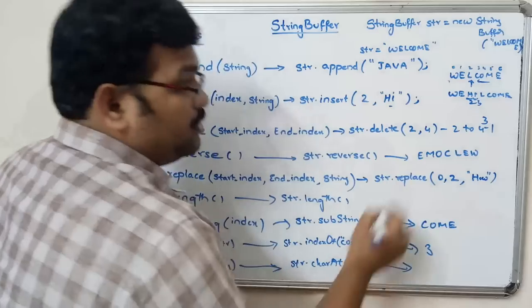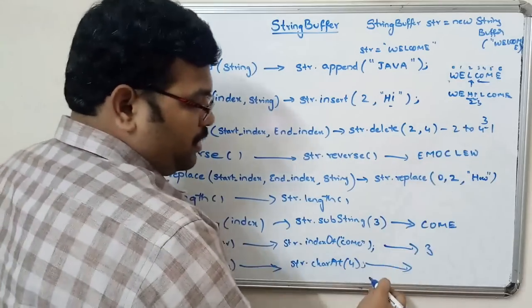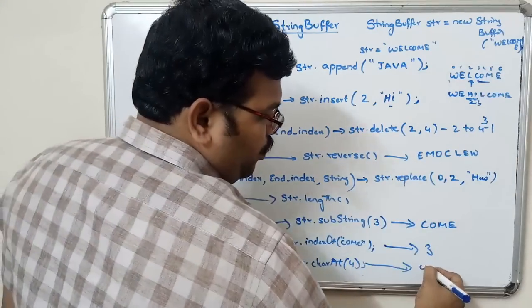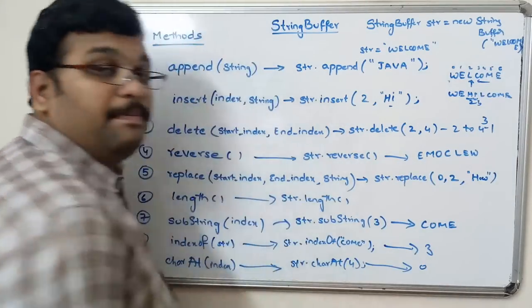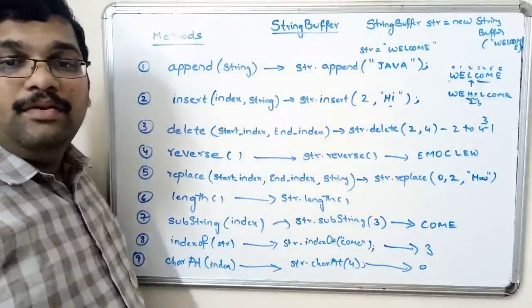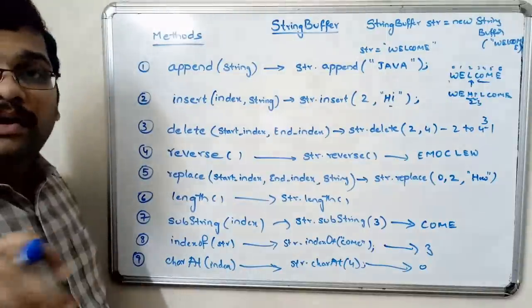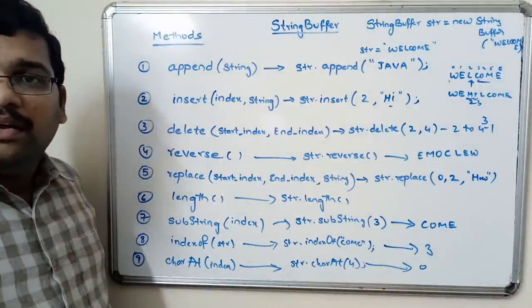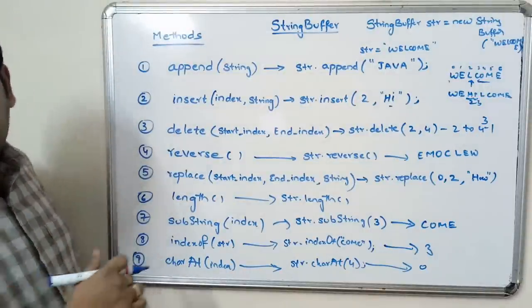For example, str.charAt(4) — what character is placed at index 4? That character will be printed.